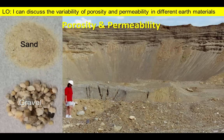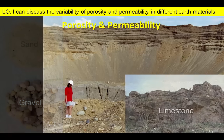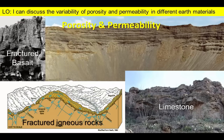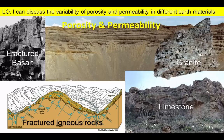Sand and gravel make for excellent groundwater sources because of their combination of good porosity and permeability. Other materials such as sandstone, some limestones, or fractured igneous rocks may also have high porosity and permeability values and serve as good groundwater reservoirs under specific circumstances. Materials like clay, fine-grained sedimentary rocks like shale, or unfractured metamorphic or igneous rocks such as granite have such low permeability values that they often act as barriers to groundwater flow.